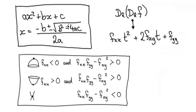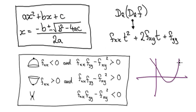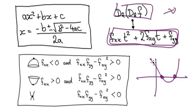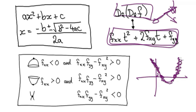If the quadratic has two solutions — sometimes the concavity is positive, sometimes it's negative — then you're at a saddle point. If you head in one direction it concaves up, and in another direction it concaves down. That's why you get a saddle point when the discriminant is positive: the concavity changes sign depending on direction.